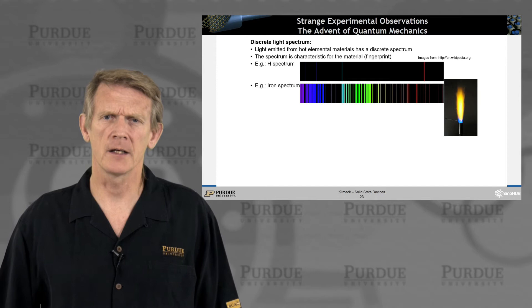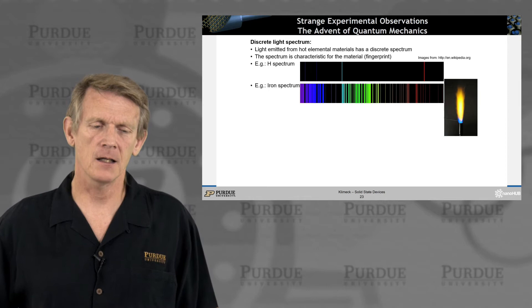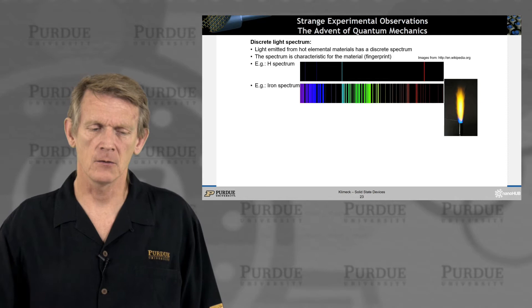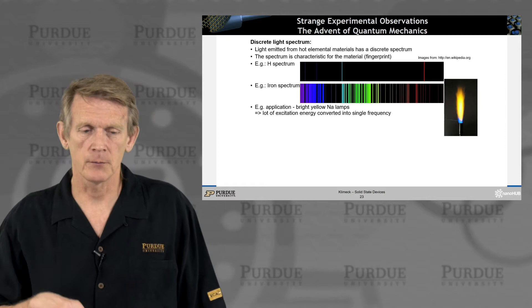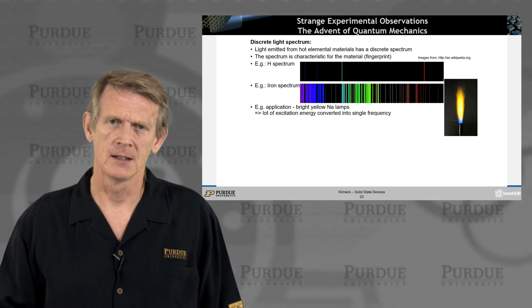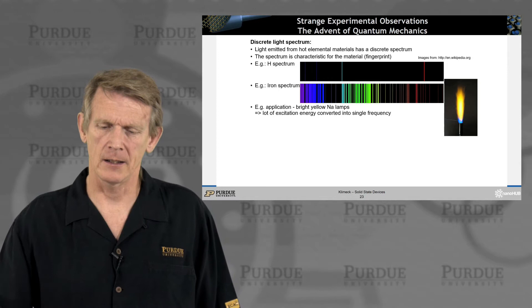They don't emit a continuum of spectra. They don't emit a continuum of light waves. So there's something discrete about the light coming out of hot hydrogen. There's something discrete about light coming from hot iron. And we use some of this, for example, not too much today anymore because we have LEDs that are powerful, but sodium lamps used to be the lamp of choice if you really need a really bright light.